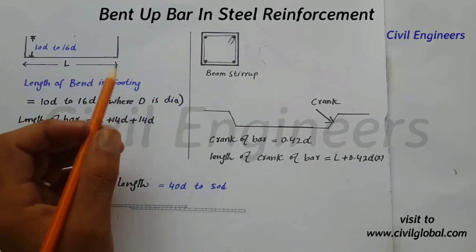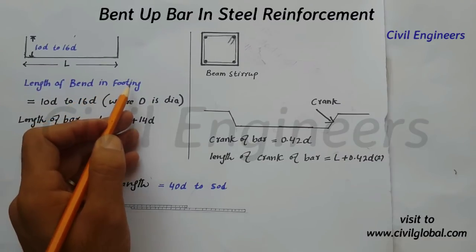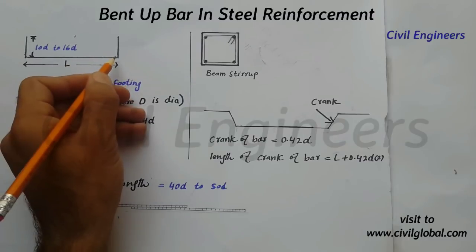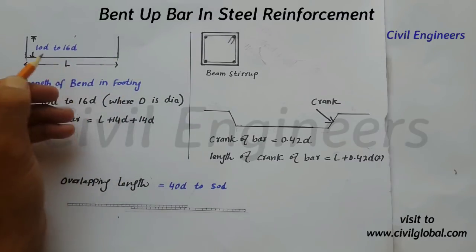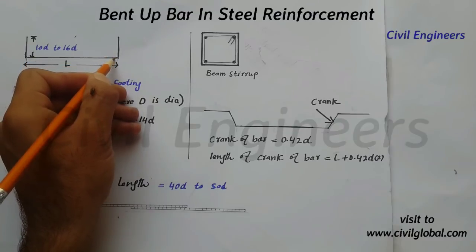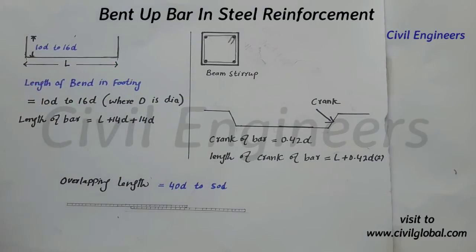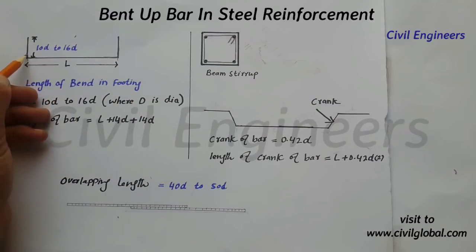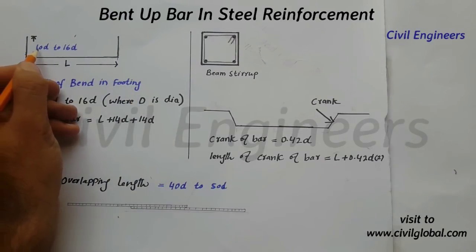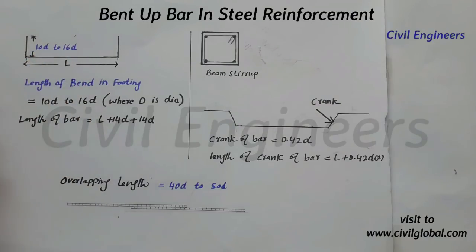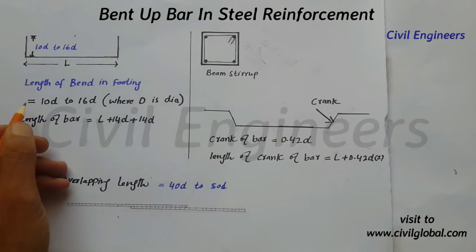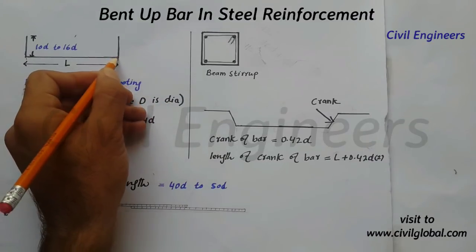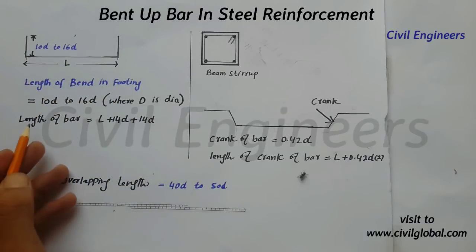The first one we have to find out is the length of bend in footing — in column footing. This is the actual length of the steel, and this is band of bar one and the second one. The formula to find out the length of bend in column footing: we can take 10D to 16D, where D is the diameter of the steel.